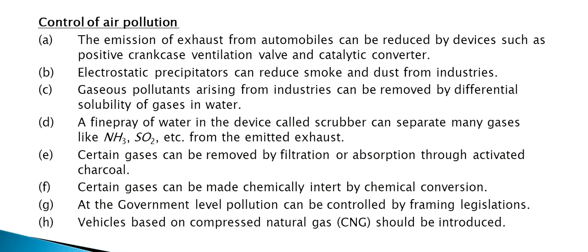For control of air pollution, emissions of exhaust from automobiles can be reduced by devices such as positive crankcase ventilation valves and catalytic converters. Electrostatic precipitators can reduce smoke and dust from industries. Gaseous pollutants arising from industries can be removed by differential solubility of gases in water.